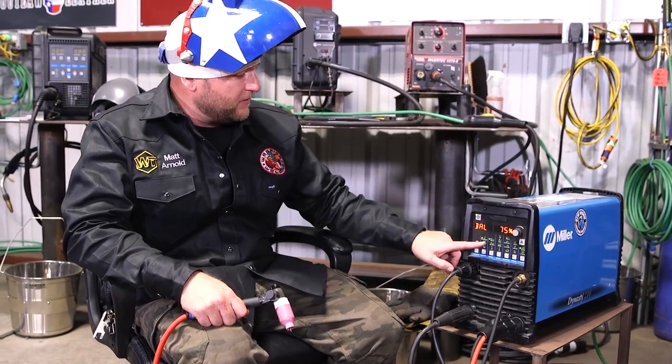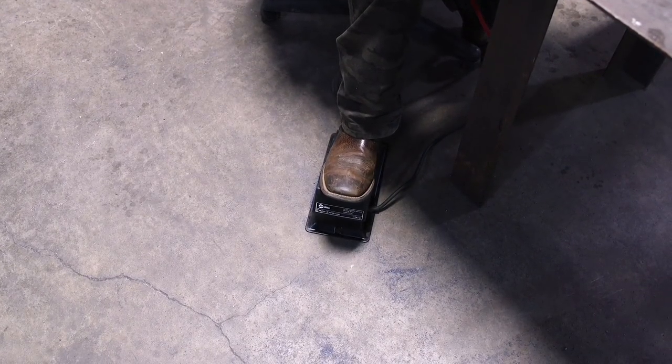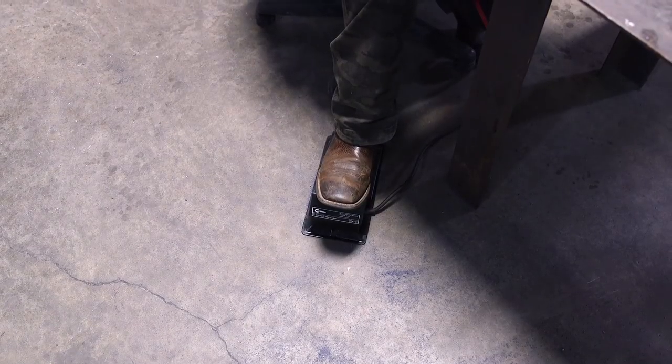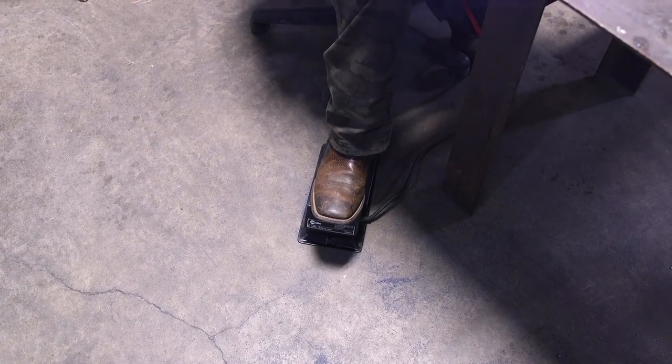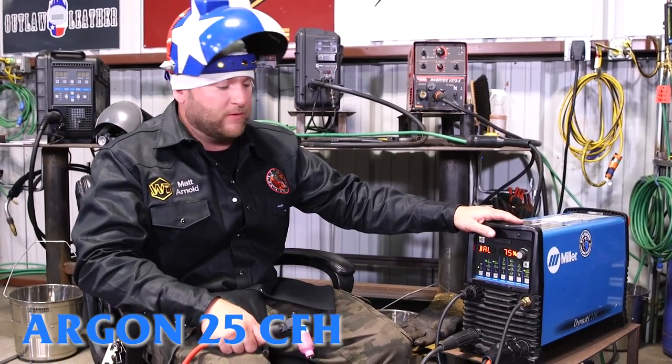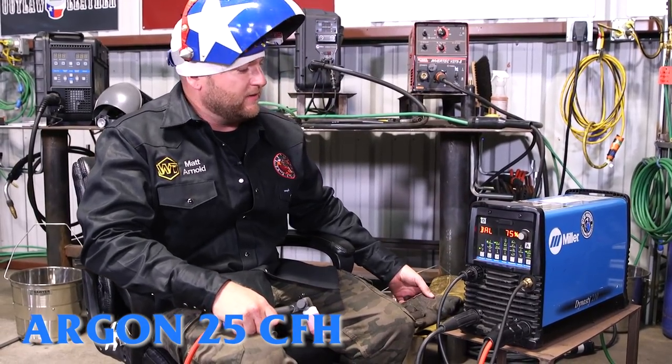I think I'm going to run 100 Hertz. Your standard AC in a transformer machine like a synchro wave would be 60, but I like to run 100 to 120. It seems to focus that arc a little bit. So 100 Hertz on our frequency, 75% balance, AC of course. We're going to run the pedal, so we're on TIG high frequency impulse. We're not lift arcing today. That's our machine hooked up to our argon bottle running 25 cubic feet per hour. Standard gas flow, nothing crazy out of the box, just very basic.